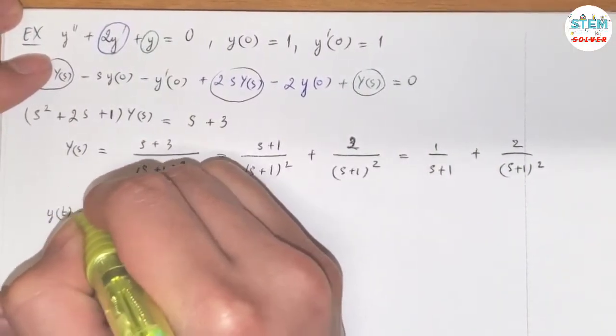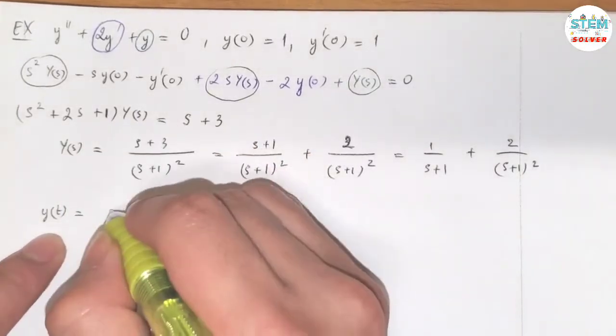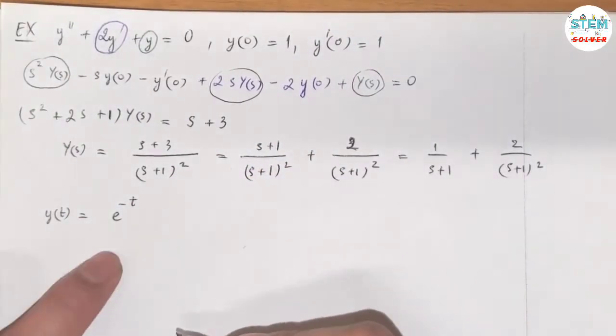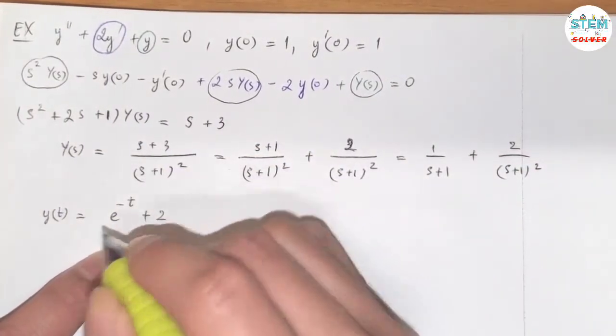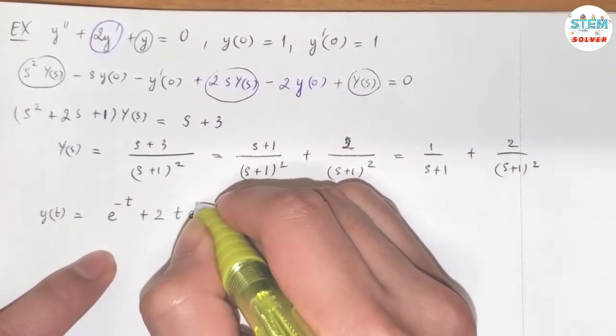Now take the L inverse on both sides. On the left side, I have y of t. And on the right side, L inverse of 1 over s plus 1 is e to the negative t. Factor out 2. Then L inverse of 1 over s plus 1 squared is equal to t times e to the negative t.